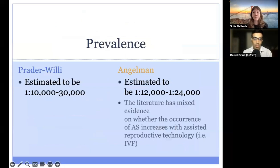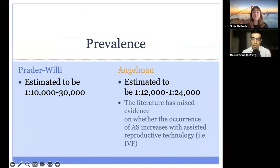Here's a glance at the prevalence of these two conditions. They're both rare diseases with similar prevalence. One note is that the literature has some mixed evidence on whether the occurrence of Angelman syndrome increases with the use of assisted reproductive technologies like IVF. Some studies have shown that these technologies increase the prevalence of Angelman syndrome, while other studies have disputed this evidence. This is an area of active research.